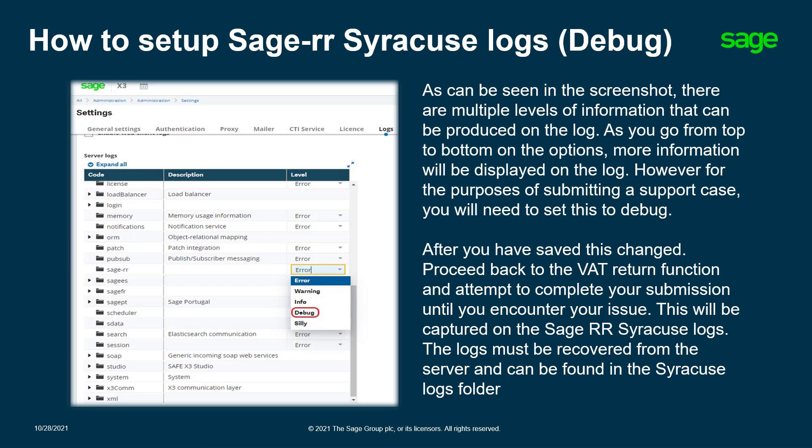So how do we set them up? To trigger the logs, go to Administration, Settings, and Global Settings. In the Server Logs section, modify the level for the Sage RR code. As can be seen in the screenshot, the level dictates how much information will be displayed in the log, increasing as you move down the list. Error shows the least and Silly shows the most. Set the level to Debug. This will be sufficient for Sage RR and for the purposes of submitting a support case.